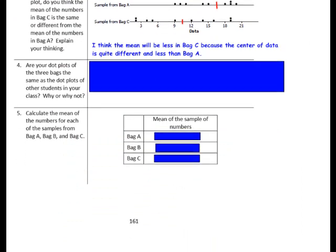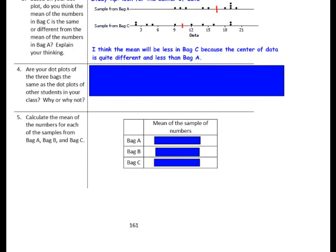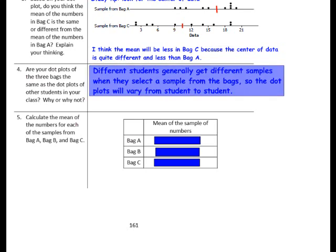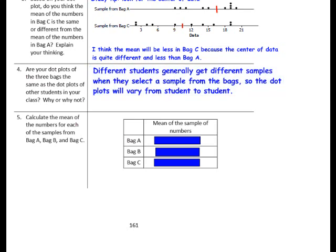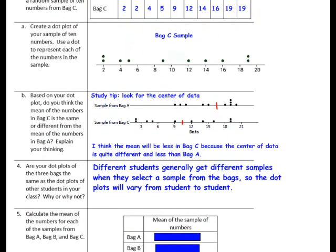Question 4: Are your dot plots of the three bags the same as the dot plots of other students in your class? Why or why not? Different students generally get different samples when they select from bags, so the dot plots will vary from student to student. Calculate the mean of the numbers for each of the samples from Bag A, Bag B, and Bag C. Add up each number and divide by how many numbers there are — in this case, 10 numbers per sample. Pause the video and complete that activity.